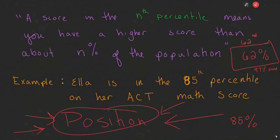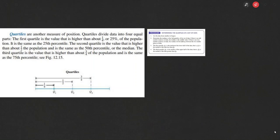The other number that we can use for a position is a quartile. Quartile is another measure for position and they divide the data into four equal parts. The first quartile is a value that's higher than one-fourth of the population, and by the way, the quartile one endpoint is the same as the 25th percentile. The second quartile is the value that's higher than half of the population. The third quartile is a value that's higher than three-fourths of the population.